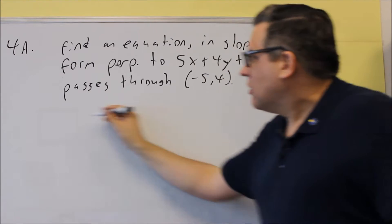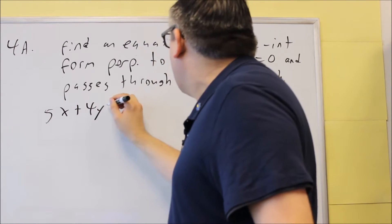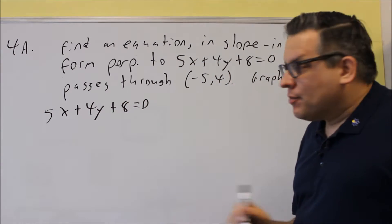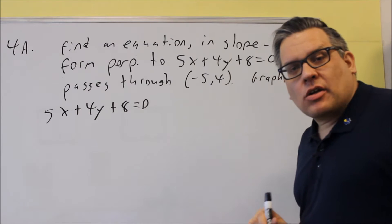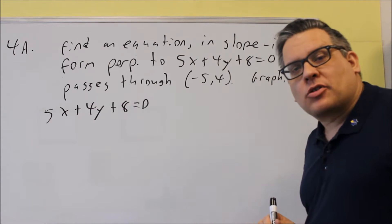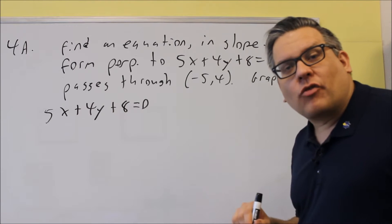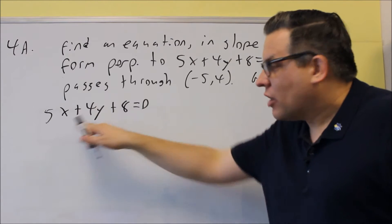So first, let's take the original one, 5x plus 4y plus 8 equals 0, and let's solve that one for y. We're going to solve it for y because if we put this into y equals mx plus b form, which is your slope-intercept form, we'll be able to tell very easily what the slope is. So let's do that first.